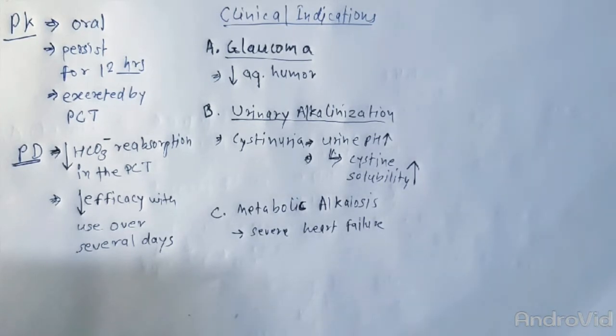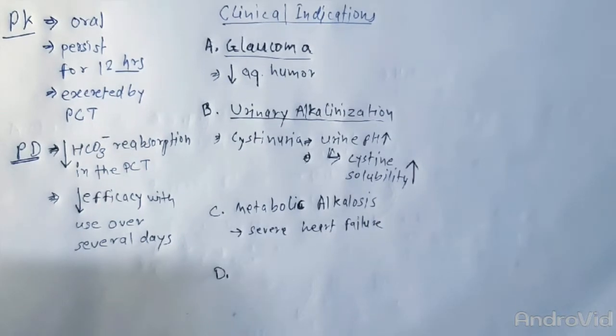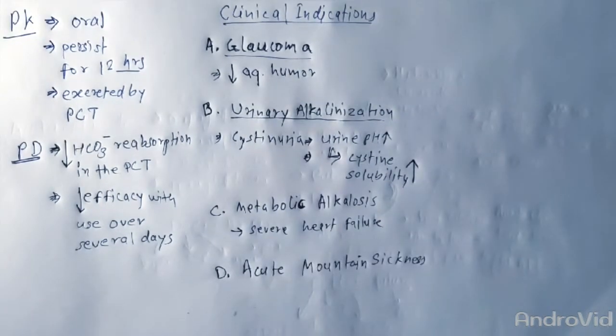In these cases, acetazolamide can be useful in correcting the alkalosis as well as producing a small additional diuresis for correction of volume overload. It can also be used in acute mountain sickness.